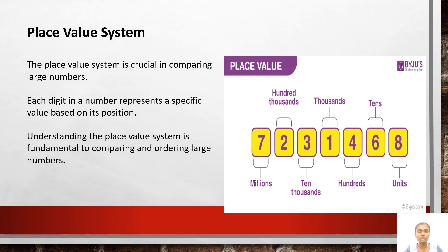The place value system is crucial in comparing large numbers. Each digit in a number represents a specific value based on its position. Understanding the place value system is fundamental to comparing and ordering large numbers. The place value in Maths describes the position or place of a digit in a number. Each digit has a place in a number. When we represent the number in general form, the position of each digit will be expanded, starting from the units place.